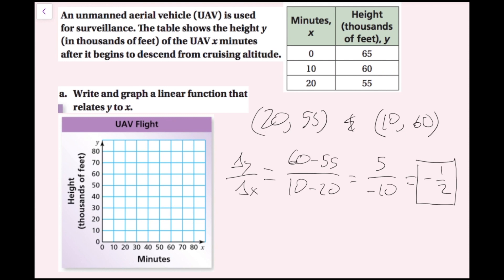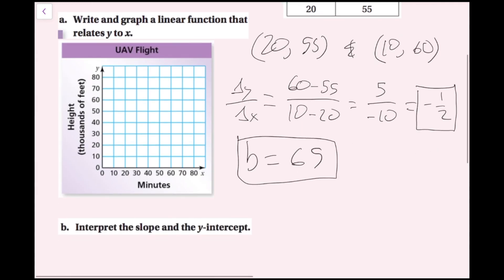To find my y-intercept, I'll look at the table again — it's given to us there. When x is 0, the y value is 65, so my y-intercept is b equals 65. Plugging into y equals mx plus b, I get y equals negative one-half x plus 65. That's my equation.